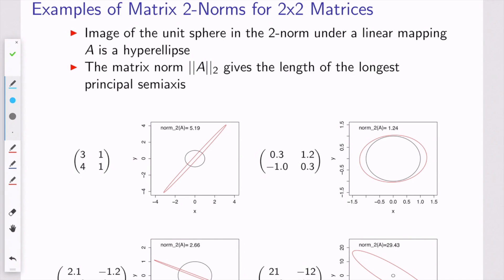If you want some more geometric intuition, we can look at two norms of two by two matrices. So this is a very specific case, but I think it's helpful. And just because of our understanding of what two by two matrices do to vectors, if you take the unit sphere in the plane, which is the unit circle, and you look in the two norm, and you look at a linear mapping A, you get some kind of ellipse.